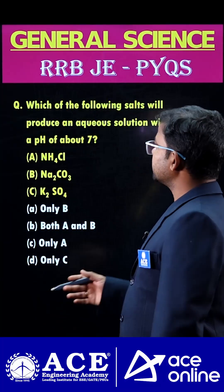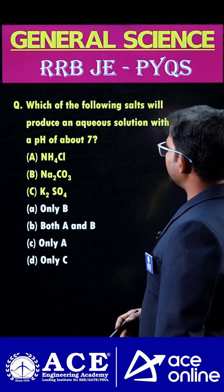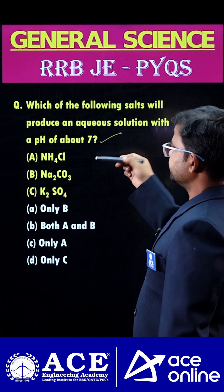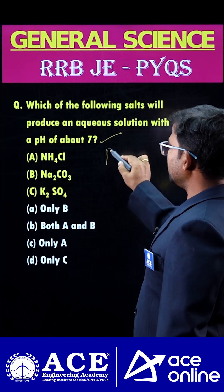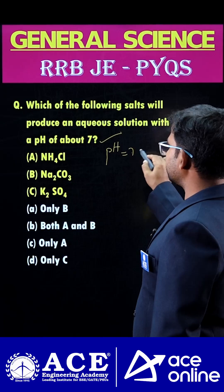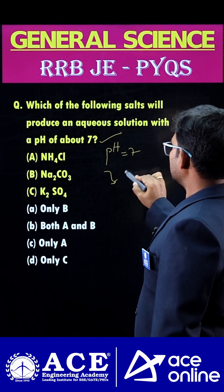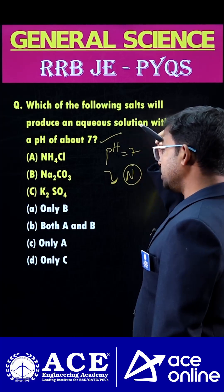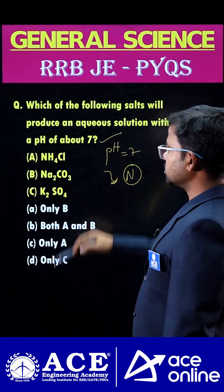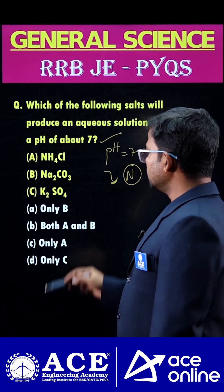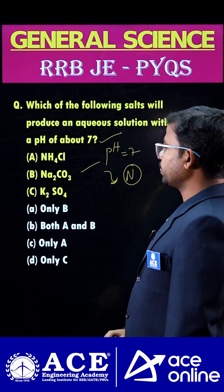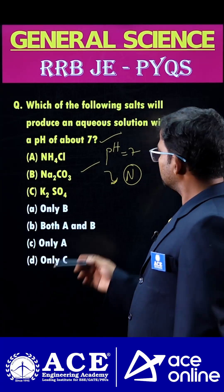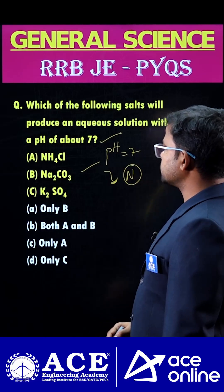Hi students, welcome to ACE online. Which of the following salts will produce an aqueous solution with pH of about 7? We already know that if any chemical exhibits pH equal to 7, it should be neutral in nature. So here they mention some salts: ammonium chloride, sodium carbonate, and potassium sulfate. Which one can exhibit pH equal to 7?